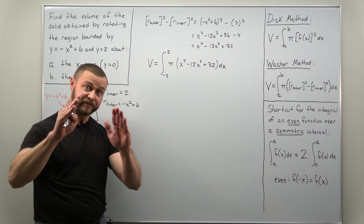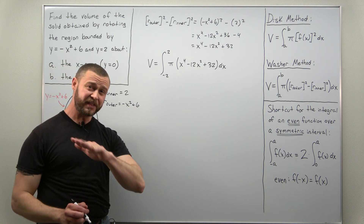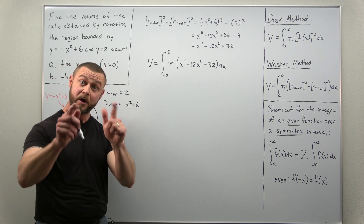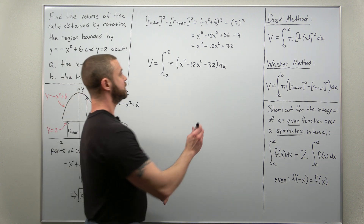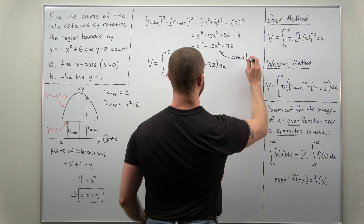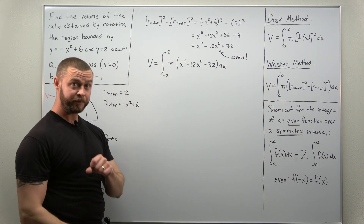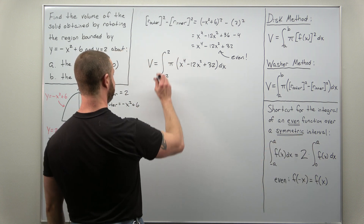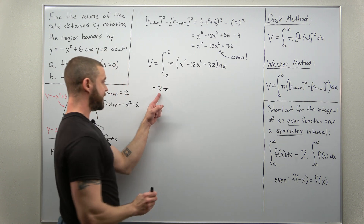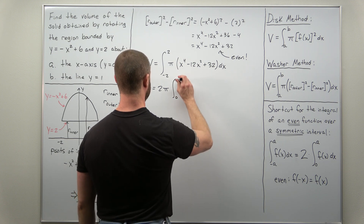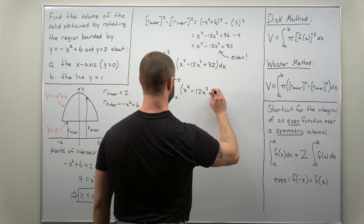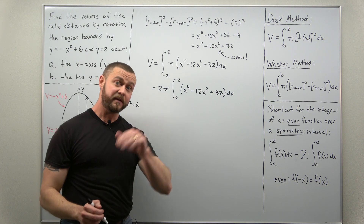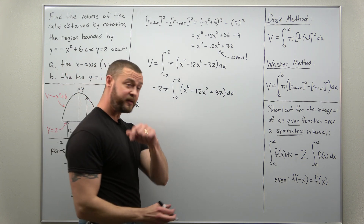You can integrate as is, but it's tedious — you'll get a fifth power of x and a cubed term, and plugging in negatives gets messy. We can observe that the integrand is an even function over a symmetric interval, so we apply the shortcut: double the integral from zero to two. Pulling out pi and applying that gives 2pi times the integral from zero to two. This is nicer because plugging zero into the antiderivative evaluates to zero.